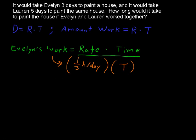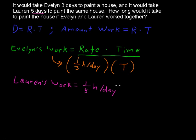Now let's take a look at Lauren's situation. Lauren's work equals Lauren's rate times her time. Lauren's rate is not five, but one over five — if it takes her five days, she finishes one-fifth of a house per day. Her time is going to be the same as Evelyn's, because this is the situation when the girls are working together.